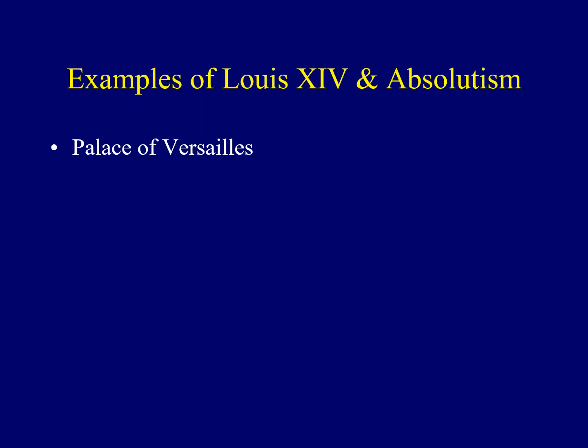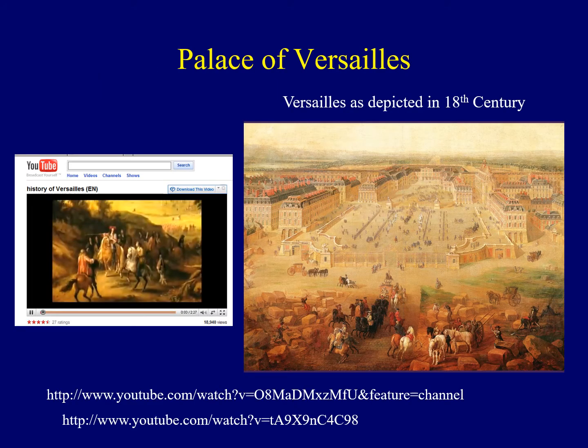I'd like to identify a range of examples of Louis XIV's absolute power. The first of these would be the Palace of Versailles. In many ways, this was a temple — kind of like the pyramids from ancient Egypt — a temple to a monarch in Europe in the 1600s. Estimates differ as to the exact cost; however, it's believed that at least half of the income of France went to build and maintain Versailles over a 50-year window of time. On the right, we see a drawing depicting what Versailles looked like in the 18th century.